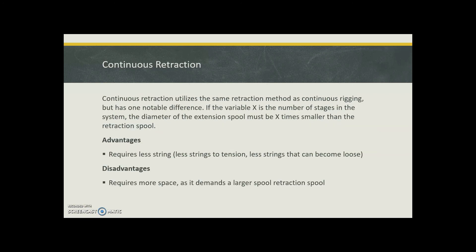Continuous retraction utilizes the same retraction as continuous rigging, but there's one big difference. If the variable x is the number of stages in the system, the diameter of the extension spool must be x times smaller than the retraction spool.